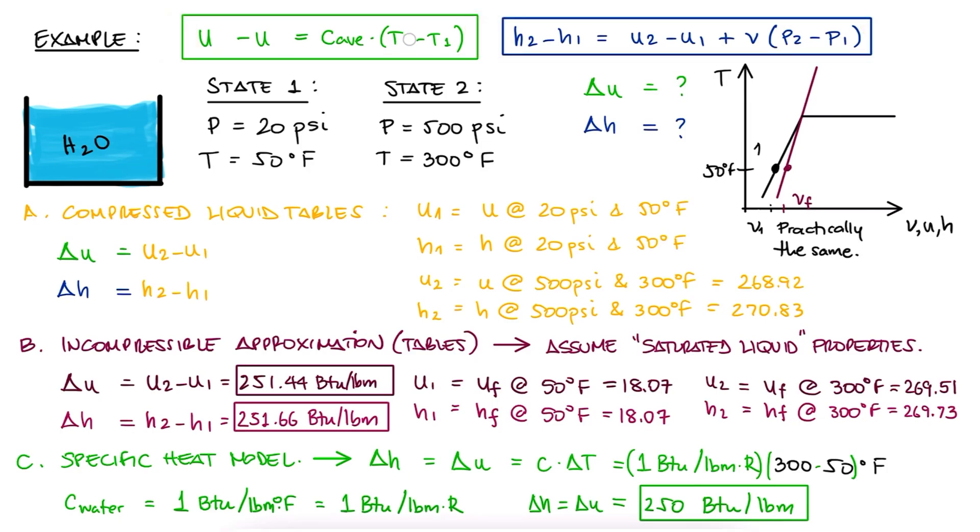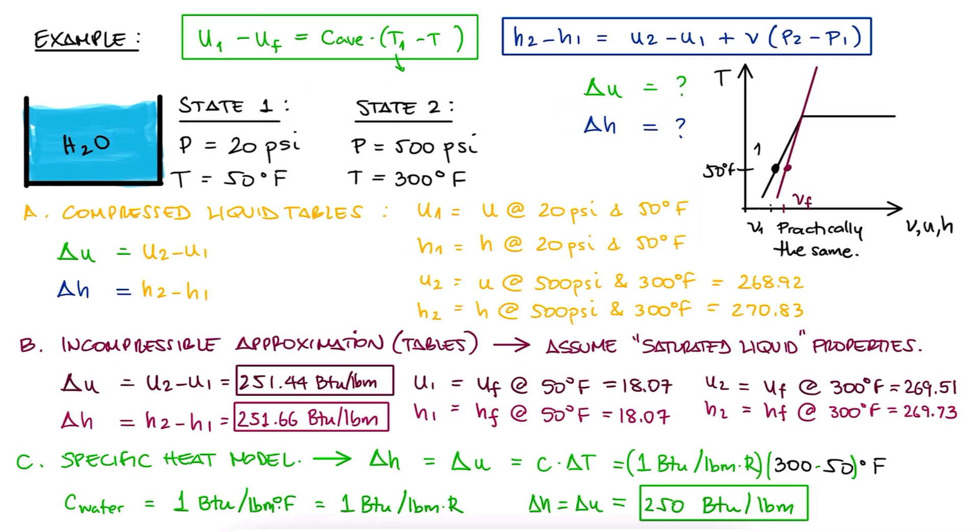Delta U can be u1 minus uf, the specific internal energy for saturated liquids, and since we want u1 at 50 degrees Fahrenheit, and we can look up uf at 50 degrees Fahrenheit as well, the change in temperature here would be zero, and so u1 is equal to uf at 50 degrees Fahrenheit. As for delta H, it can be h1 minus hf. Since we just showed that u1 minus uf is zero, h1 is equal to hf plus V times p1 minus pf.